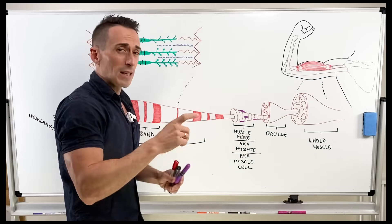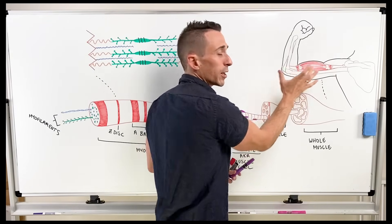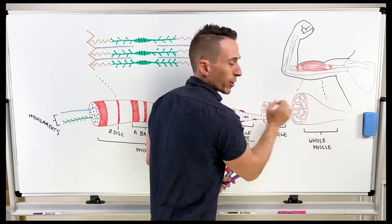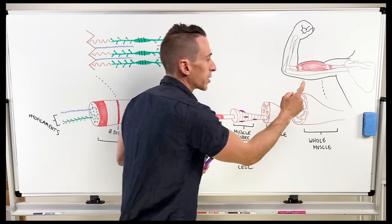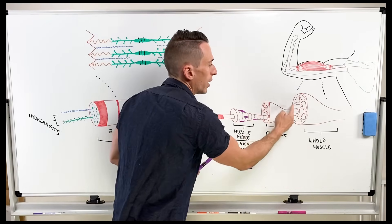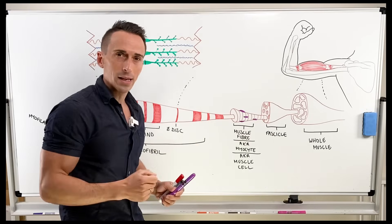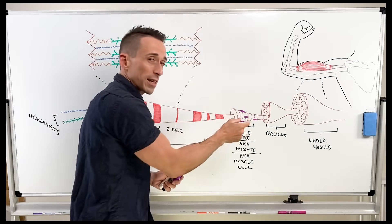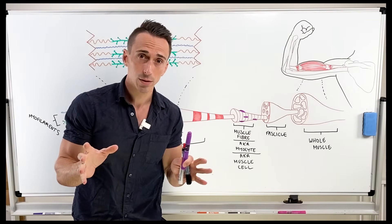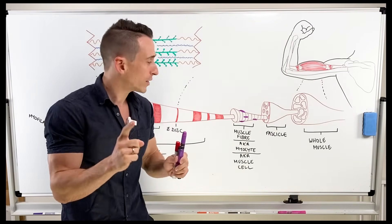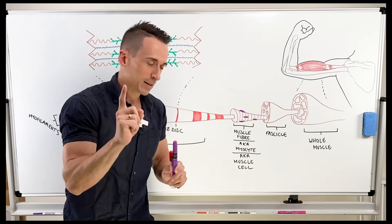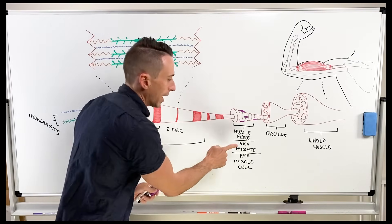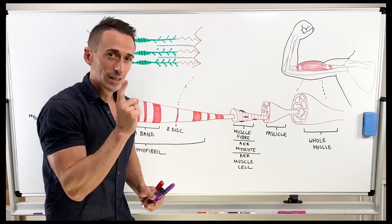What you can find here is we have a whole skeletal muscle — this is the bicep, sitting right here. We take this whole muscle and we find that it is comprised of multiple bundles that we call fascicles. If we pull one of those fascicles out, we find that these fascicles are made up of multiple muscle fibres. When we talk about muscle cells, also known as myocytes, we're talking about a muscle fibre. So a muscle fibre is also known as a myocyte and also known as a muscle cell.